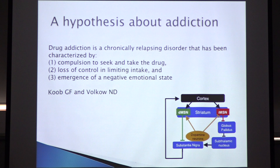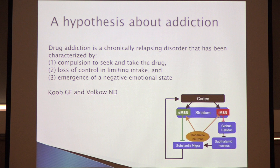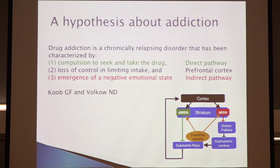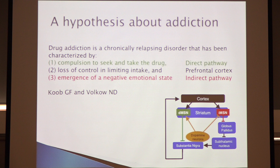Framing the talk in terms of addiction, the direct pathway and its plasticity may be most responsible for the compulsive aspects of drugs of abuse. The prefrontal cortex is in position to provide inhibitory control, so dysfunction there may relate to loss of inhibitory control. And the indirect pathway — I'm being somewhat simplistic — may contribute to the negative emotional state associated with addiction.